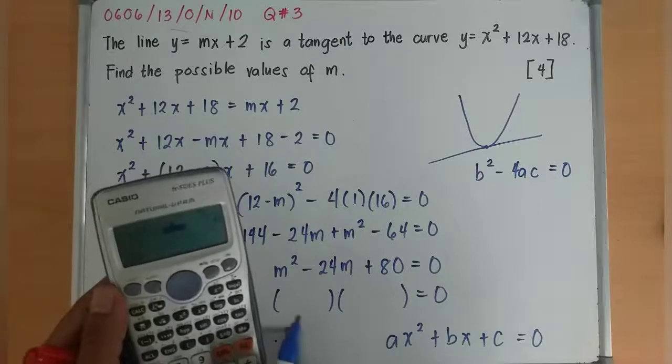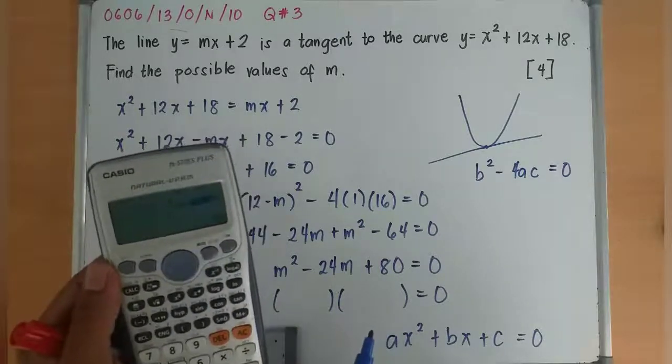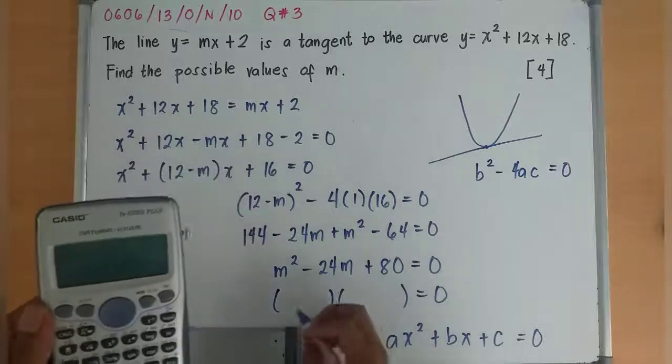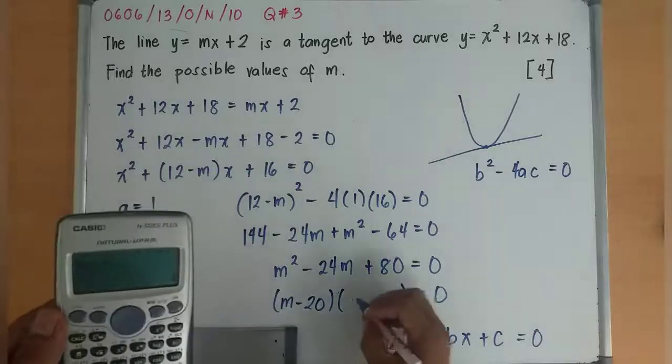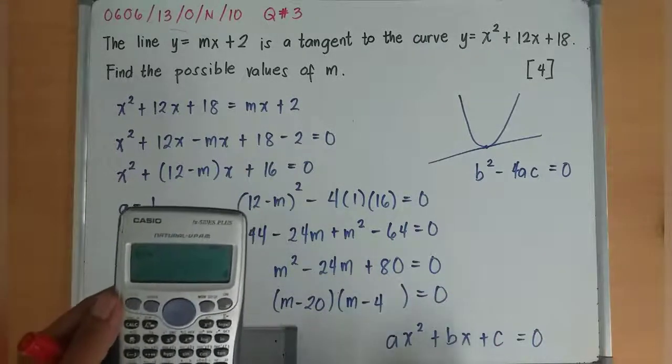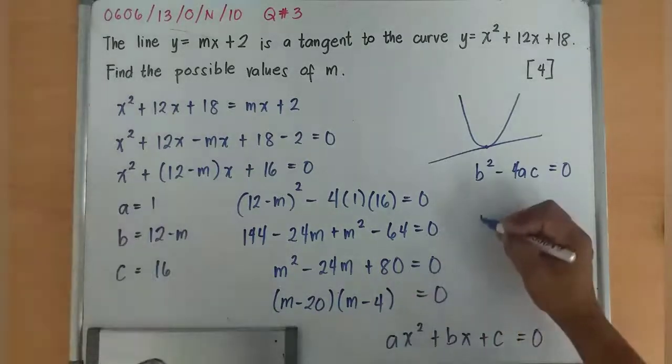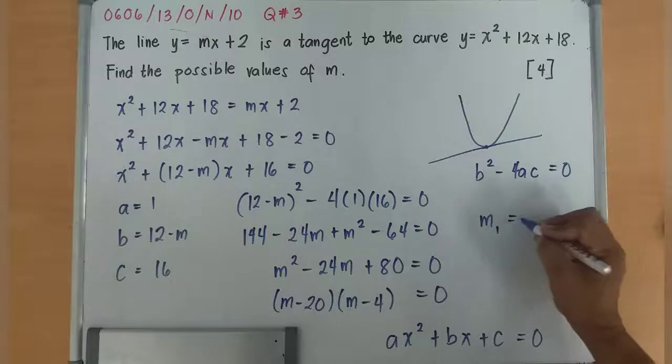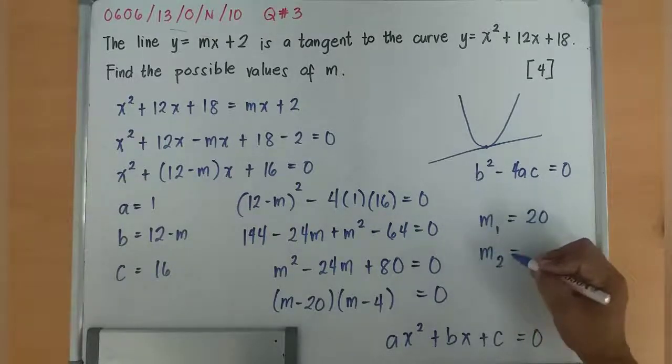I have 20. So (m - 20)(m - 4) = 0. Thus, the first value of m is 20, and the second value of m is 4.